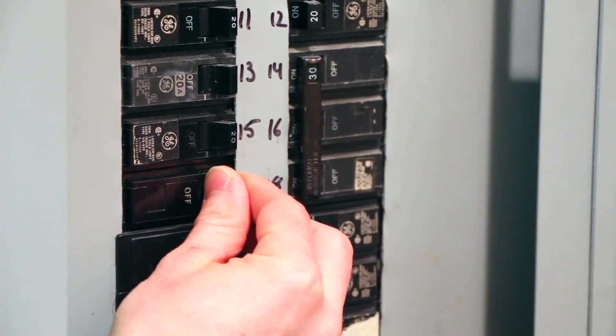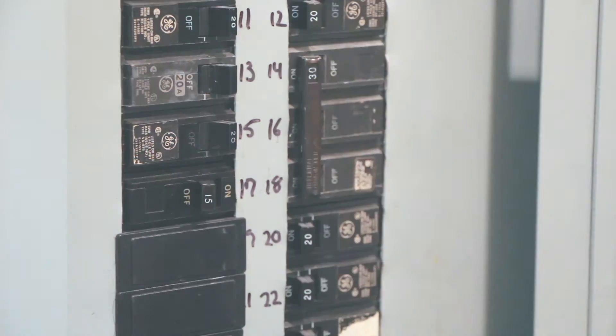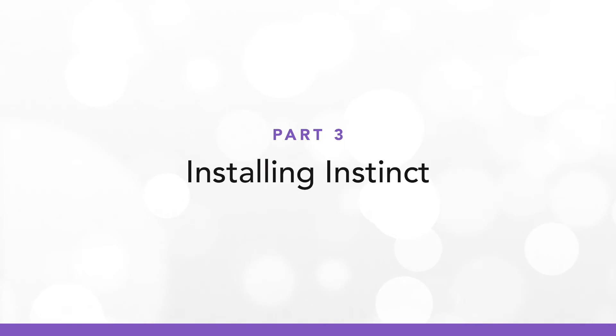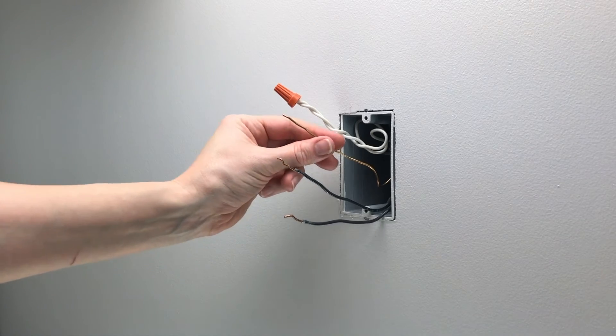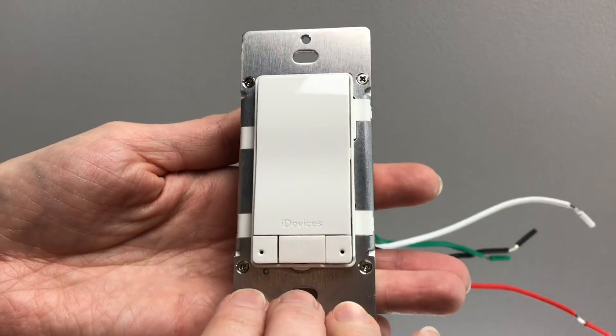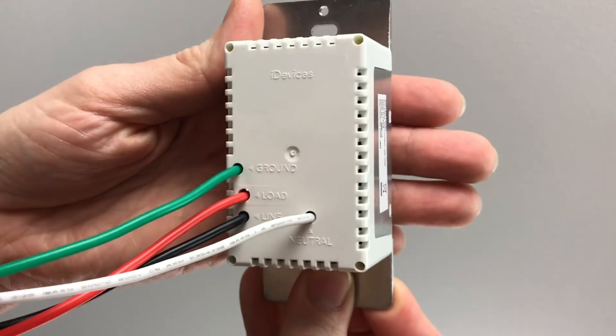Turn the power back off at the breaker. Straighten out the wires. Instinct's wires are labeled on the back for easy identification.